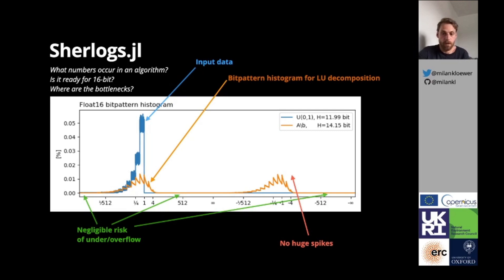We also do not observe any huge spikes. The little ones result, as before, from the discontinuities between exponent and significant bits. In conclusion, this tells me that the LU decomposition, given randomly uniformly distributed data, is likely to provide satisfying results with Float16.